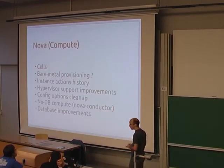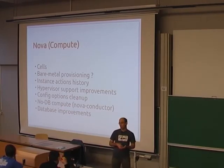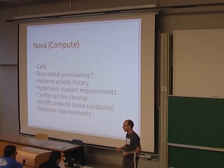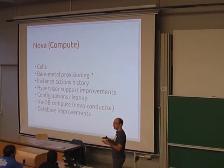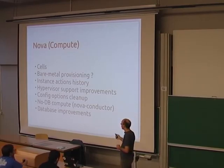On the Nova side, the most significant thing in my opinion is support for Cells, which you can use to deploy OpenStack at massive scale without having to rely on tricky HA systems for everything like the queue or the database. You basically have separate Nova deployments that are completely self-sufficient and federated to each other. That's actually what Rackspace uses for their deployment, which is really large. It's great that we managed to merge it into mainline code.